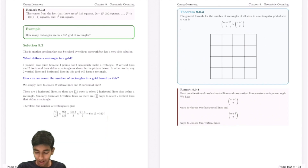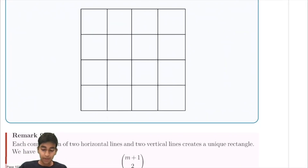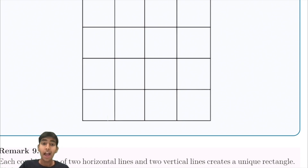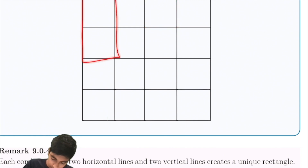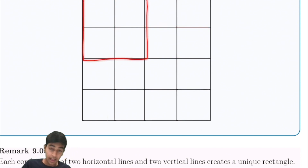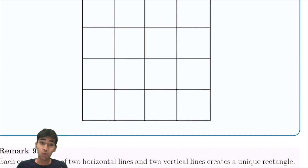Let's start off with a cool formula to find the number of rectangles in a grid. So let's say we've got a rectangular grid and the question is, in this grid, how many rectangles are there? And we mean more than just these small little ones — every type of rectangle. There's way too many possibilities to count here. So to do this, we have a really cool trick we can use.